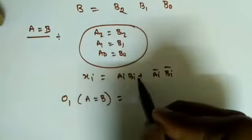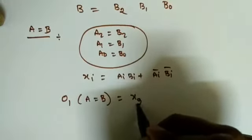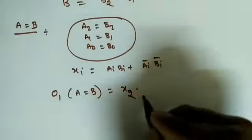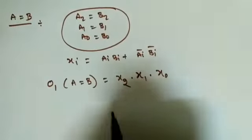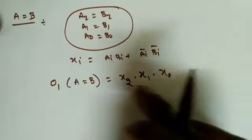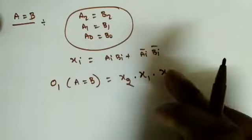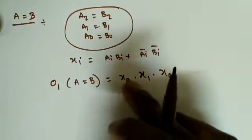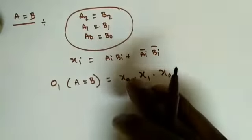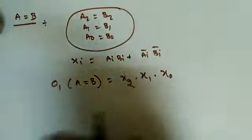For A equals B, the expression is X2·X1·X0 — all three XNOR outputs ANDed together. O1 = X2·X1·X0. If any one of X0, X1, or X2 is zero, the output becomes zero meaning A is not equal to B, so A may be greater or less than B.